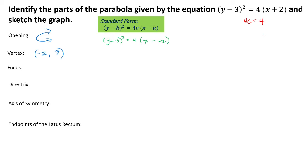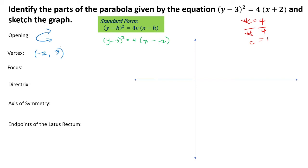For our focus, we will refer to our 4c and we need to get the value of c. We divide both sides by 4, so 4 over 4 gives us c equals 1. Therefore, our focus is 1 unit away from our vertex, and that is to the right of our vertex.